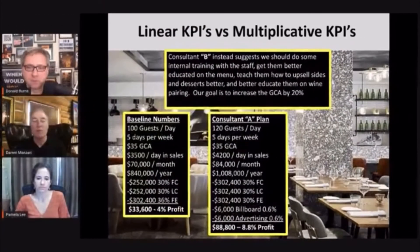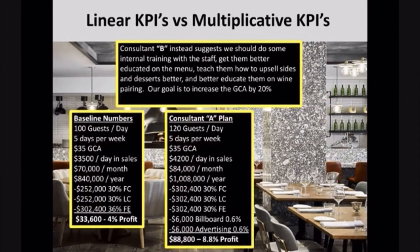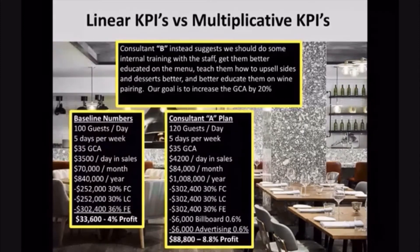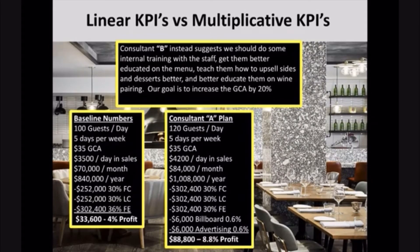Now let's look at Consultant B — this is Donald Burns' plan. Consultant B had a different idea. Even though Consultant A worked and we made more profits, Consultant B instead suggests doing some internal training with the staff. Let's get them better educated on the menu and teach them how to upsell sides better, upsell desserts better, and educate them on wine pairing to get wine sales up. The goal here is to increase the guest check average by 20%.